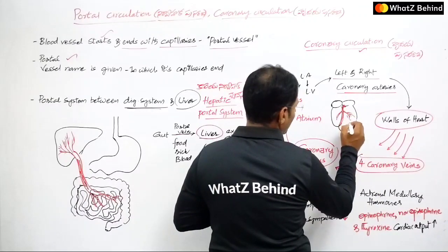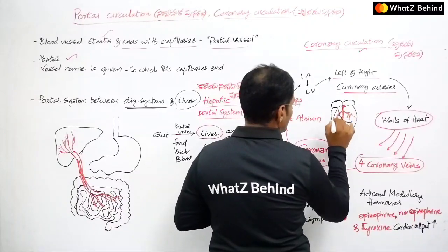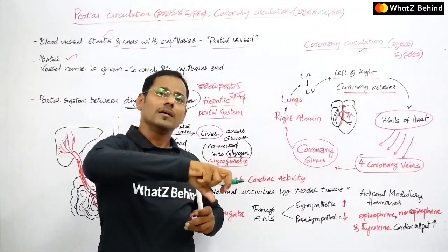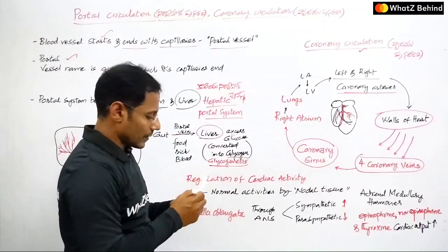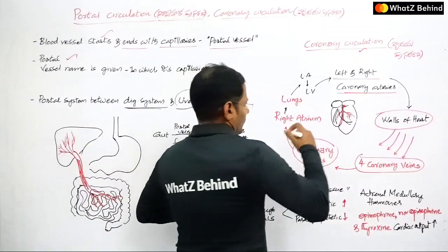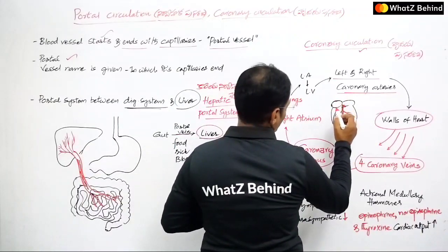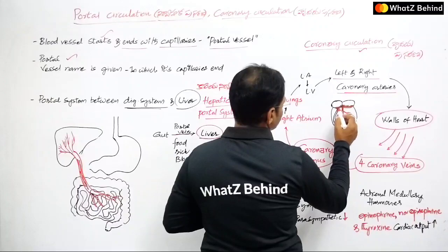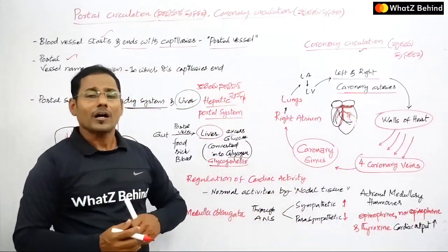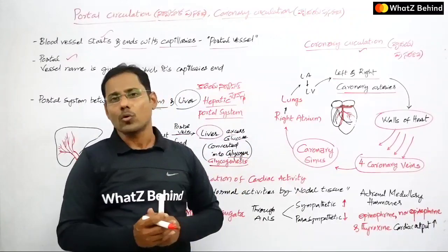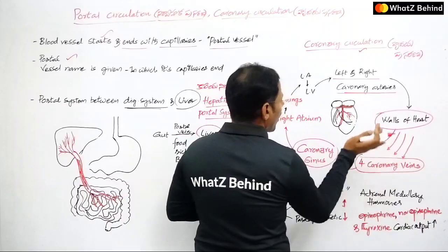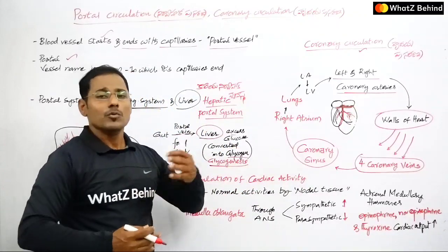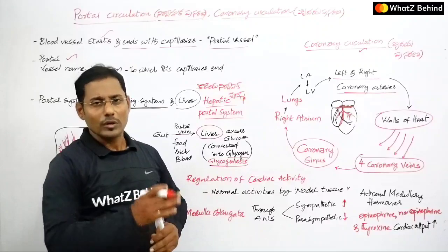Four coronary veins start from different locations in the heart, collecting deoxygenated blood from the heart muscles and heart walls. These four coronary veins drain the deoxygenated blood into a special sinus known as the coronary sinus, which is present in between the auricles and ventricles — at the atrioventricular septum.